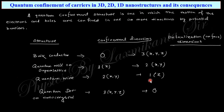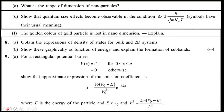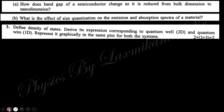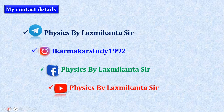To summarize: for bulk material there is no confinement and three degrees of freedom. A quantum well has one confinement and two degrees of freedom. A quantum wire has two confinements and one degree of freedom. A quantum dot has three confinements and zero degrees of freedom. Practice questions from previous years are available; there is also a separate playlist for previous-year solutions. That's it for today — take care and we'll meet in the next video.